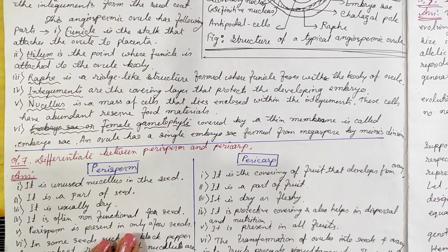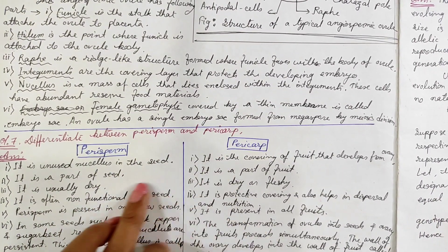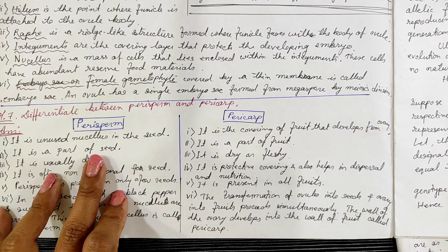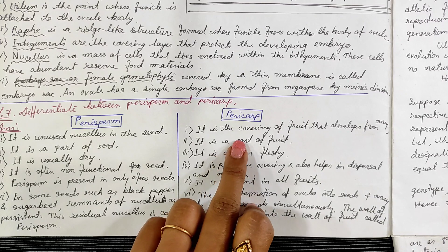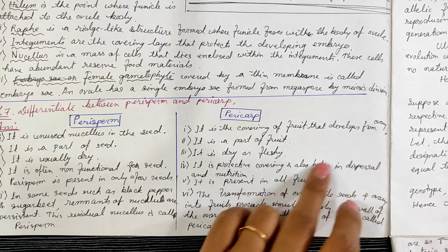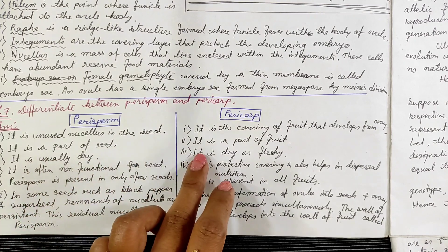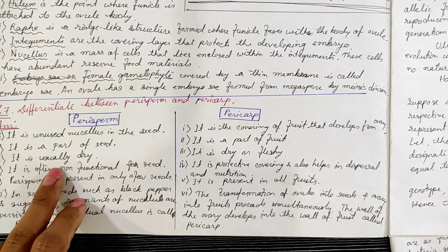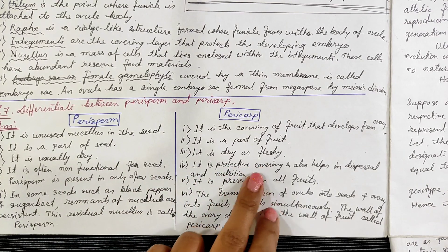Next question: define the difference between perisperm and pericarp. Perisperm means it is unused nucellus in the seed, and pericarp means it is the covering of the fruit that developed from the ovary. Perisperm is part of the seed, but pericarp is part of the fruit. Perisperm is usually dry, but pericarp is usually fleshy.